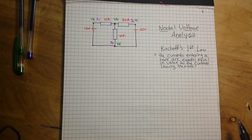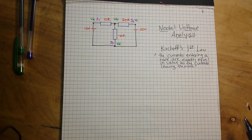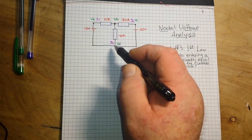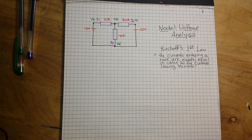Nodal voltage analysis finds the unknown voltage drops around a circuit between the different nodes. And these black dots are the nodes. So it's pretty simple. It complements what's also known as mesh analysis, and we'll talk about that in another video.